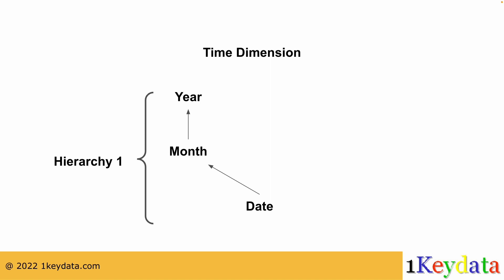There is also the relationship between week and date, and this represents a second hierarchy. There is no direct relationship between week and month, or between week and year. So in this case, there are two separate hierarchies within the time dimension.